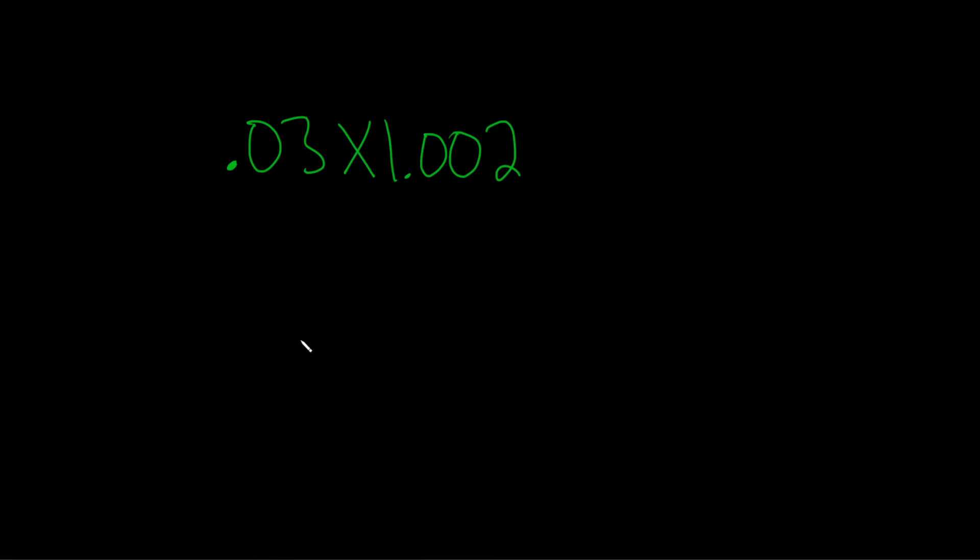In this problem, we're going to multiply these decimals. So I'm going to start by writing down the bigger number up top like this, 1.002.